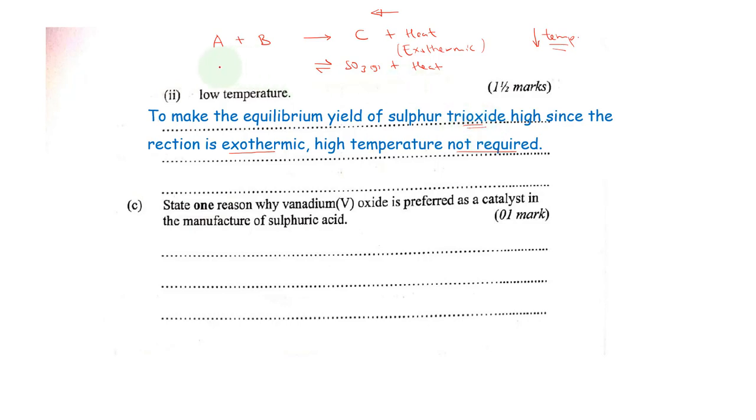What that is saying is that our sulfur dioxide in presence of oxygen, if we use lower temperatures, we shall have more of sulfur trioxide being formed. That's why high temperatures are not required. We have to use low temperature.